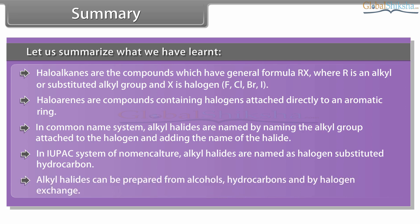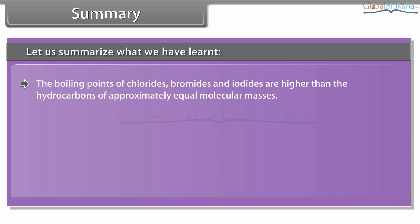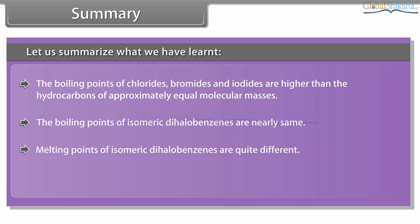Alkyl halides can be prepared from alcohols, hydrocarbons and by halogen exchange. The boiling points of chlorides, bromides and iodides are higher than the hydrocarbons of approximately equal molecular masses. The boiling points of isomeric dihalobenzenes are nearly the same. The melting points of isomeric dihalobenzenes are quite different. The halogen alkanes are only slightly soluble in water.